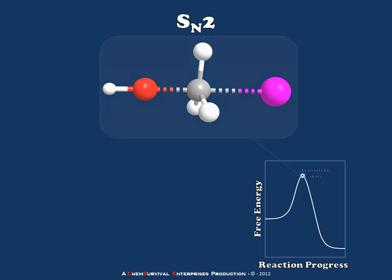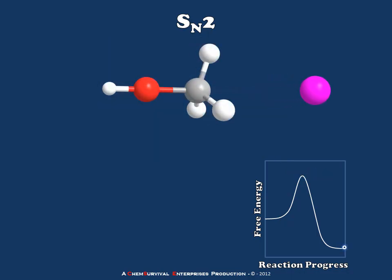As this transition state falls down the energy diagram, we reach a point at which the leaving group has completely departed and the nucleophile has attached itself to the substrate. What's interesting about this mechanism is that it can only occur through backside attack — the nucleophile must attack from the opposing side of the substrate relative to where the leaving group departs. Because of this feature, SN2 reactions will always proceed with complete inversion of stereochemistry, so a chiral starting material should result in a chiral product with inverted configuration.